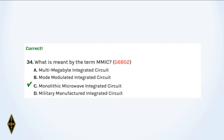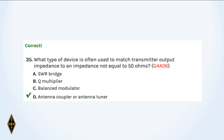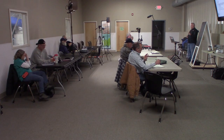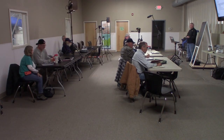And 34: What is meant by the term MMIC, or MIMIC? A monolithic microwave integrated circuit. Your cell phone is filled with them. And 35, the last question: What type of device is often used to match transmitter output impedance to an impedance not equal to 50 ohms? That's an antenna coupler, also known as an antenna tuner.